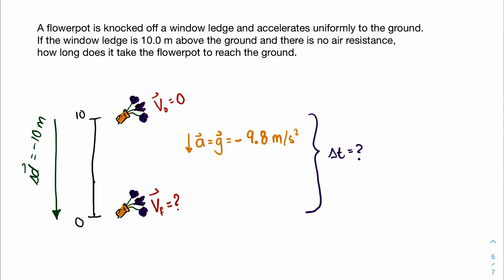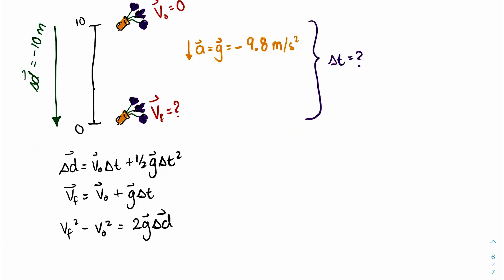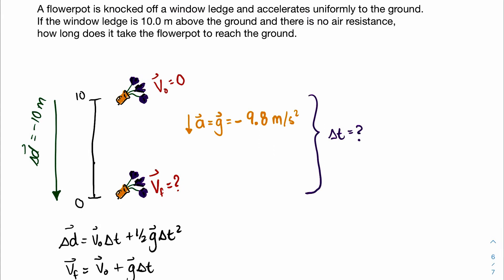In the next step, we're going to write down the three main equations of motion. Although there are five, I find that usually I only require three, so we're going to only write three because that's what you're going to need most of the time. Now let's go back and read the question again quickly to see that we didn't miss any information. A flower pot is knocked off a window ledge and it accelerates uniformly to the ground. If the window ledge is 10 meters above the ground and there is no air resistance, how long does it take for the flower pot to reach the ground?